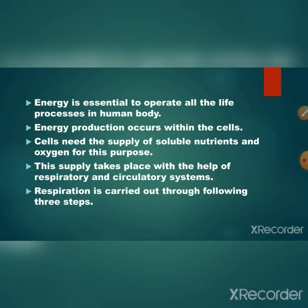Energy is essential to operate all the life processes in the human body. Energy production occurs within the cell; cells need a supply of soluble nutrients and oxygen. This supply takes place with the help of the respiratory and circulatory systems. Respiration is carried out through the following three steps.